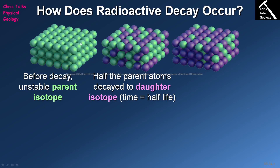In order for this process to occur you need to have an unstable parent isotope, which decays to give us the daughter isotope. What you'll notice when you look at this diagram is that taking the parent isotope and turning it into the daughter isotope is not changing the total number of atoms involved. All that's happening is that we are changing parent isotopes into daughter isotopes — the total number of atoms doesn't actually change, and that's going to be important later.